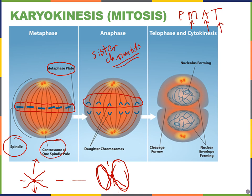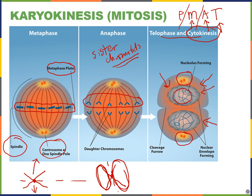Telophase happens when the chromosomes have reached the opposite ends of the cell. It is essentially the opposite of prophase — chromosomes start decondensing, the nuclear envelope begins to reassemble, and the spindles break down. After telophase comes cytokinesis, the separation of the cytoplasm. There's no real pause between phases; the cell just goes through them continuously, and we name the phases to make it easier to discuss each step.